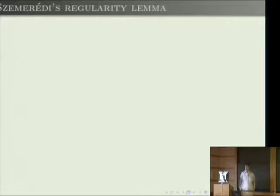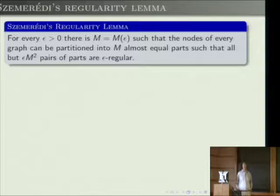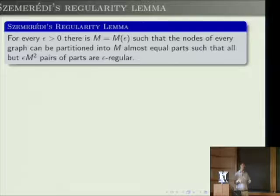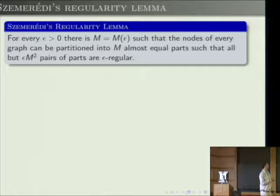In his proof of the Erdős-Turán conjecture, Szemerédi introduced his famous regularity lemma. It gives a rough structure result for all graphs and is one of the most powerful tools in graph theory. It says: for every epsilon greater than zero, there's a positive integer m such that the vertex set of every graph can be partitioned into m almost equal parts, all but an epsilon fraction of which are epsilon-regular—meaning the graph behaves randomly between pairs of parts.